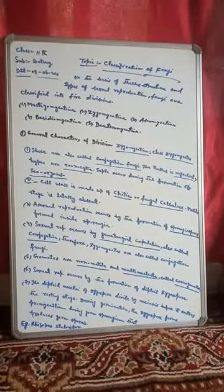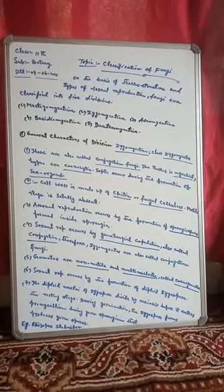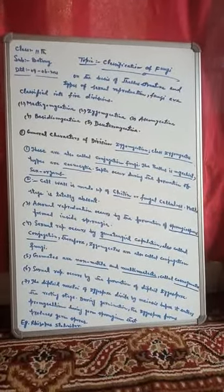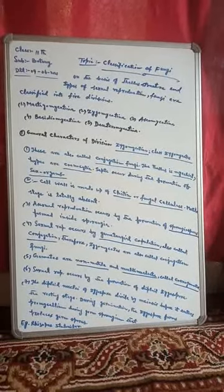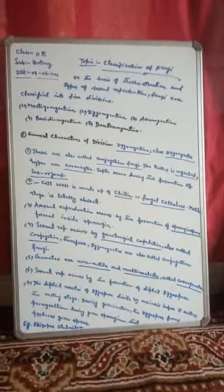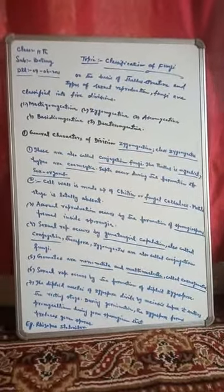The first division is Mastigomycotina, the second is Zygomycotina, the third division is Ascomycotina, the fourth is Basidiomycotina, and the fifth one is called Deuteromycotina.